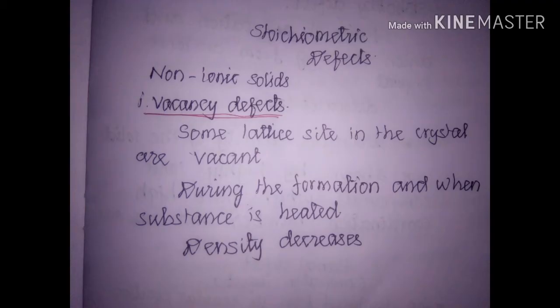Stoichiometric defects in non-ionic solids are of two types: vacancy defects and interstitial defects. Vacancy defects are because of missing lattice sites in the crystals. These are usually formed during the formation of the crystals and when the substance is heated. While heating, some molecules move away from the crystals, leaving lattice sites vacant, and because of the vacancy, the density of the crystal decreases.